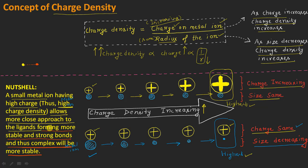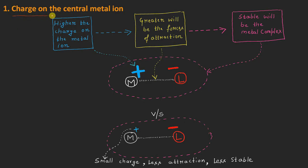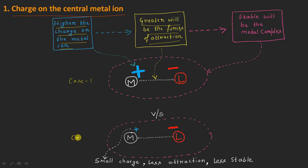Charge density depends upon the charge as well as the size of the metal ion, giving us two sub-factors. Now, as it is clear, the higher the charge on the central metal ion, the greater will be the forces of attraction between the metal and the ligand, and the more stable will be the metal complex. Let's say in case one a metal ion is present with some ligand, and in case two the same metal ion and same ligand are present.